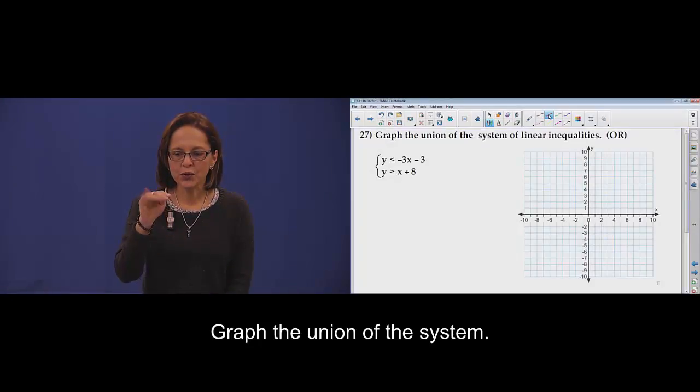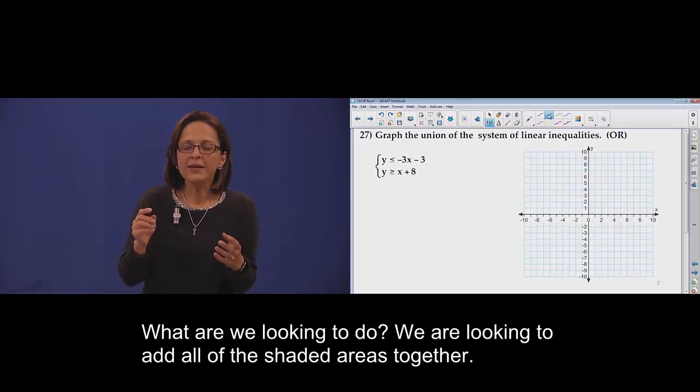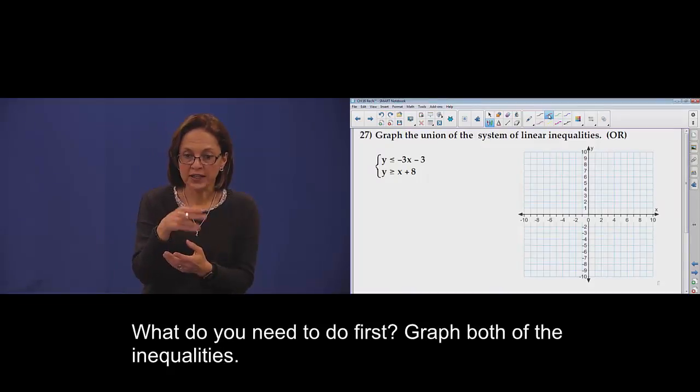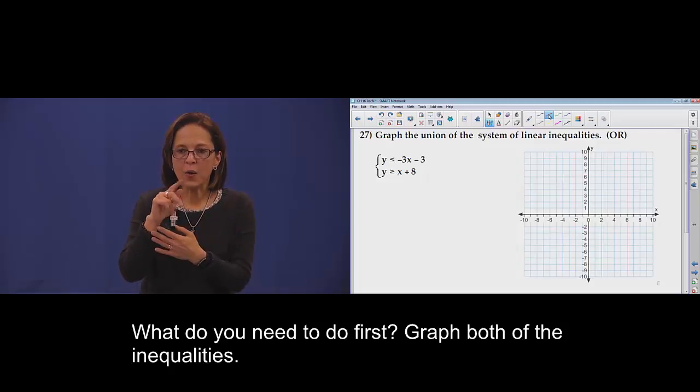Graph the union of the system. We're looking for what? Add all the shadow areas. What to do? Grab both inequalities first.